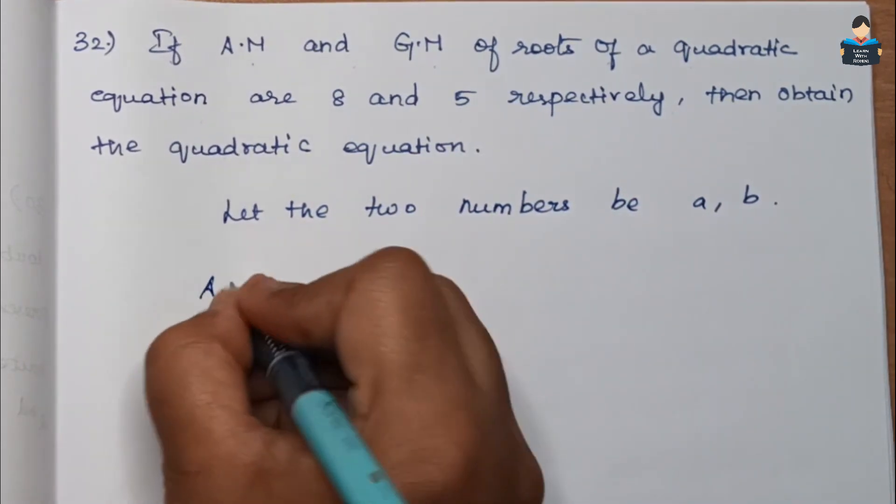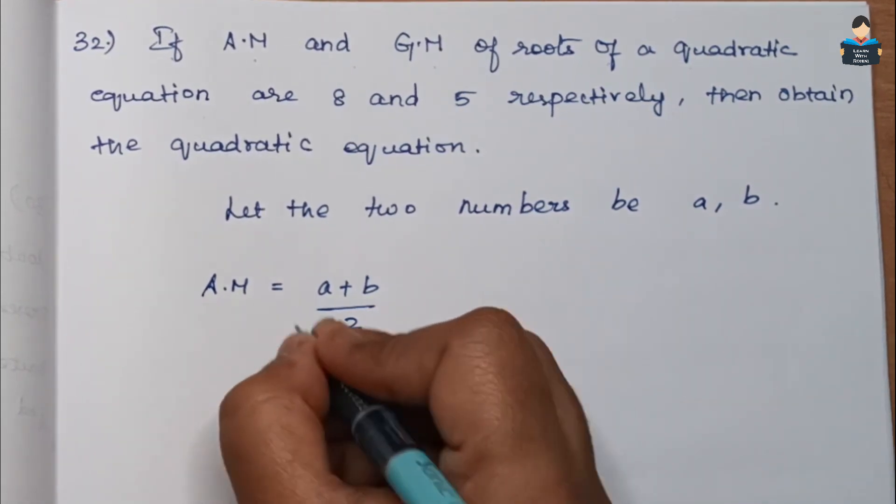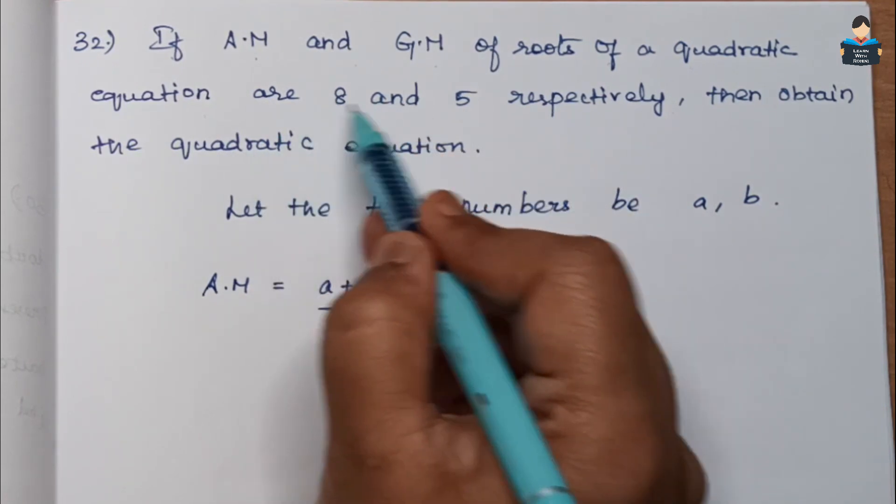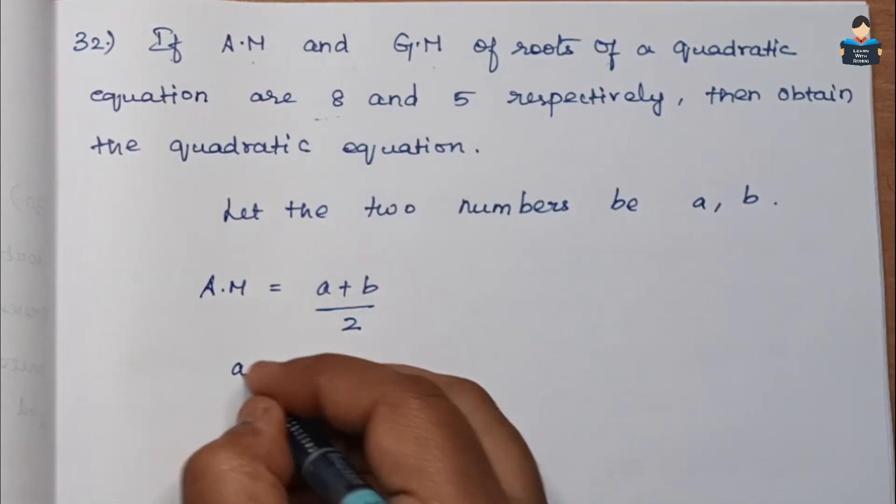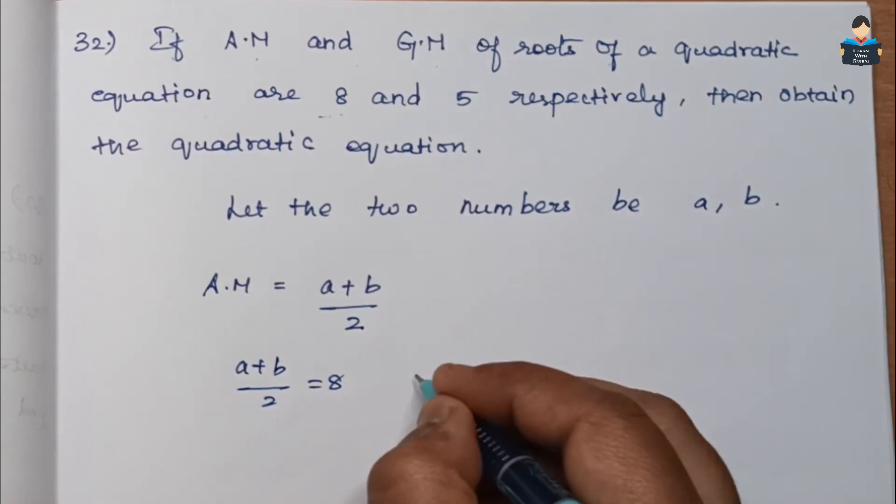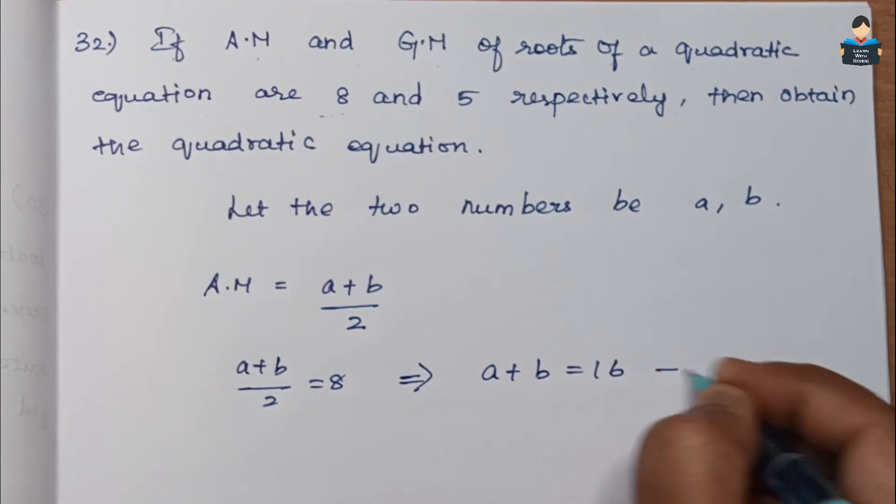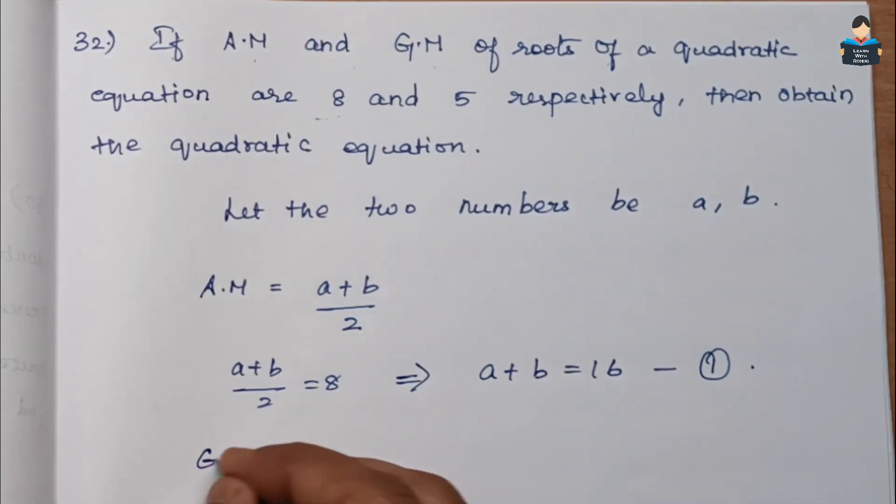The AM is given by (a plus b) by 2, and AM is given as 8. So (a plus b) by 2 equals 8. Cross multiplying: a plus b equals 16. This is the first equation.